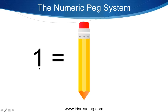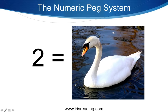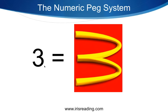Memorize right now: one equals a pencil — because they have the same shape. Number two represents a swan — picture the curvy top and flat bottom of the number 2. When I say two, you imagine a swan. Number three represents McDonald's — turn your head sideways and three looks like the golden arches.